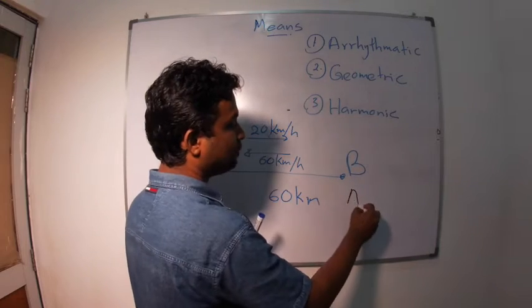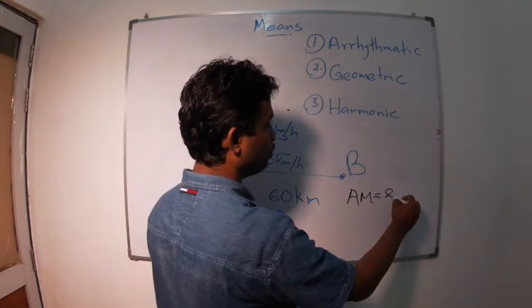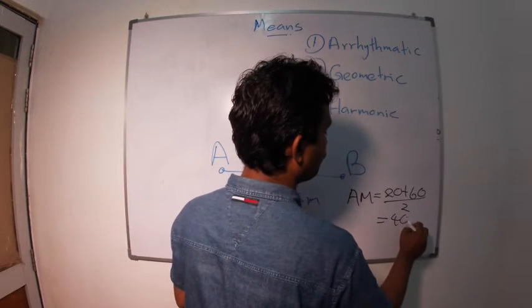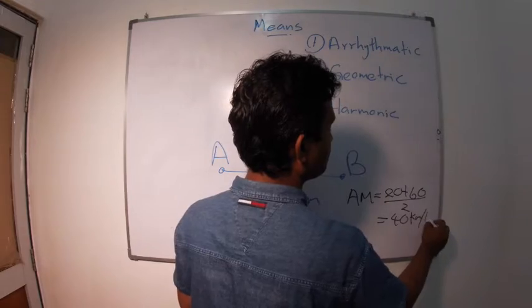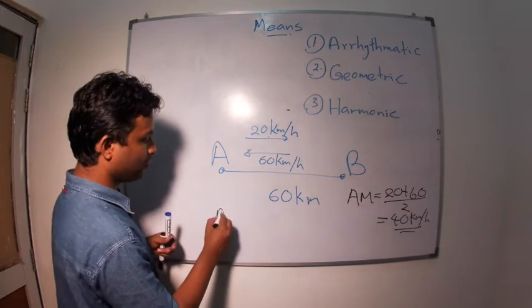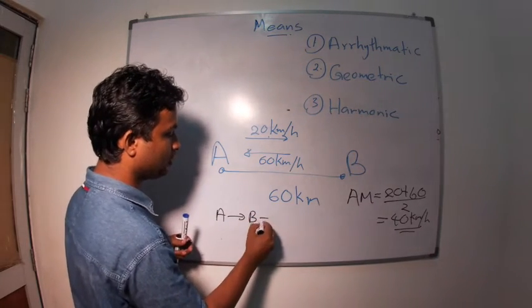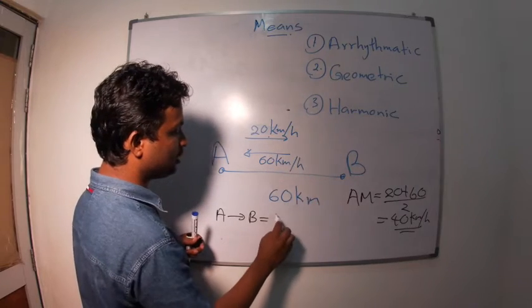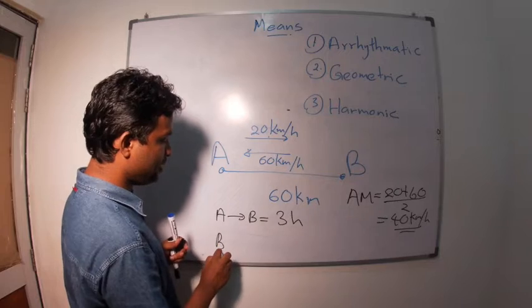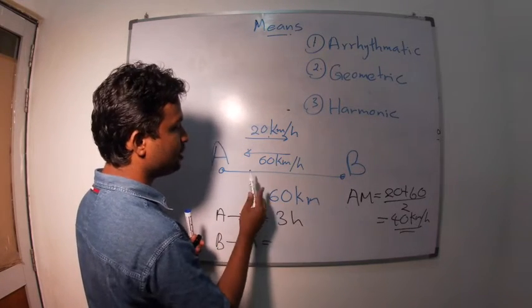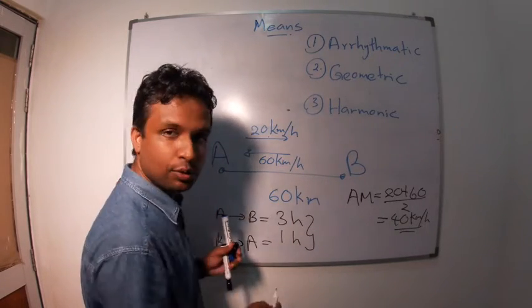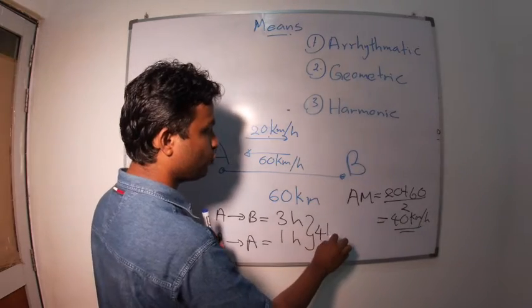So, what is the arithmetic mean? 20 plus 60 divided by 2 equals 40 kilometers per hour. What is the time taken for the total journey? So, from A to B, 20 kilometers per hour, 60 kilometers. So, it's three hours. From B to A, 60 kilometers with the speed of 60 kilometers per hour. So, one hour. What is the total time duration? It's four hours.